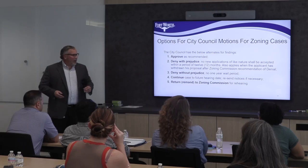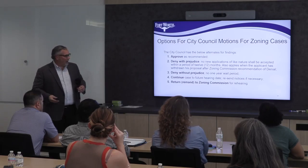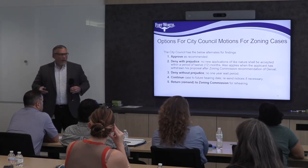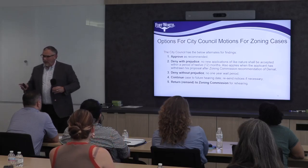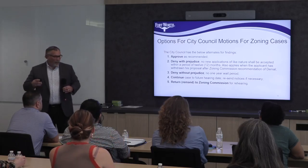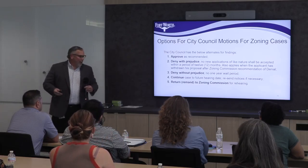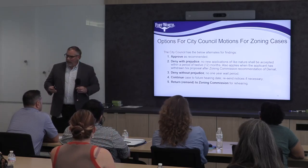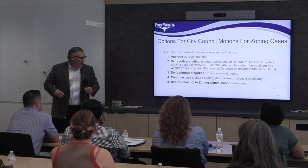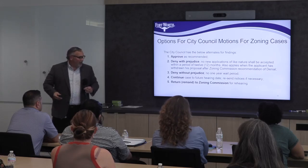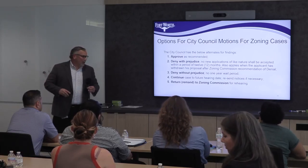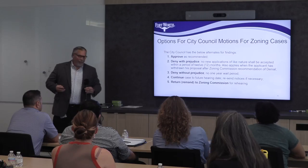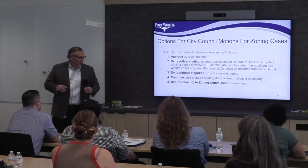At council, your presentation will be available if you've provided it to us, and you'll have three minutes to speak. City council will make their final determination: they can approve as recommended, deny with prejudice — meaning you can't come back with the same zoning case within a year — deny without prejudice — meaning you can come back next month — continue the case, which means it comes back next month or next week, or remand it back to the zoning commission, which doesn't happen too often.